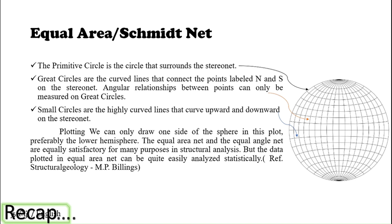We can only draw one side of the sphere in this plot — preferably the lower hemisphere. The equal area and equal angle nets are equally satisfactory for many purposes in structural analysis, but data plotted in the equal area net can be more easily analyzed statistically, so we will use it. In crystallography, you may use the equal angle net with the upper hemisphere. In structural geology, we use the lower hemisphere — the portion where the rock lies on the surface.